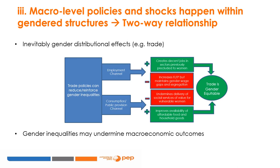On the other hand, gender inequalities may undermine the achievement of macroeconomic objectives. For instance, gender-intensified constraints in accessing productive assets such as land, other inputs, and markets, causes productivity gaps between female and male farmers. This gender gap means that the capacity of the agricultural sector to generate greater output in response to better prices and economic incentives remains limited.